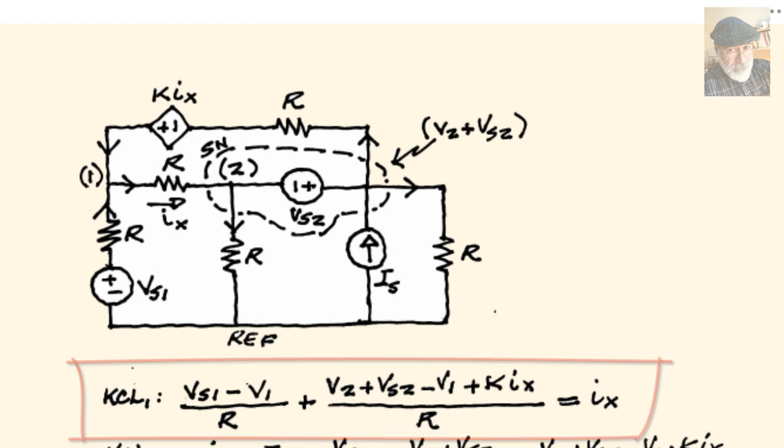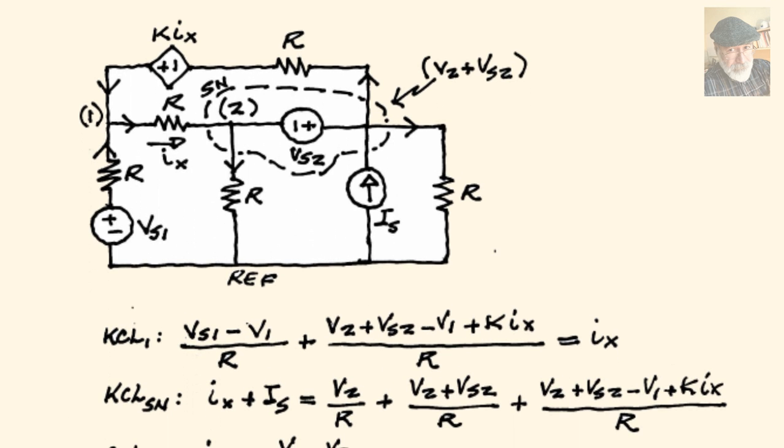Now the KCL for the supernode, for the Gauss surface highlighted. How many branches arrive in that supernode? Let's count them. 1, 2, 3, 4, and 5. So that KCL equation for the supernode is going to have five terms.